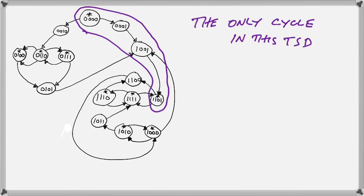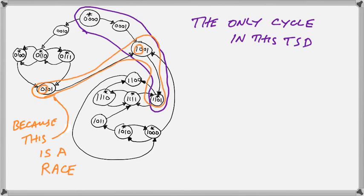When we look at our total state diagram, we see that there is really only one cycle. This is highlighted in the purple, where we're going from stable state at the top through two unstable states to the stable state at the bottom. Some students thought that what's there in the orange was a cycle as well. But, unfortunately, it's not because this is actually part of a race.